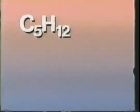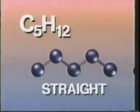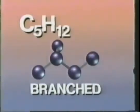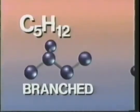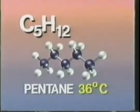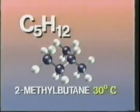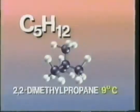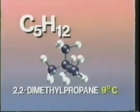A hydrocarbon with the formula C5H12 has three different structural isomers: a straight chain, a branched chain, and yet another different branched chain. The isomers are distinct compounds with different boiling points. Pentane boils at 36 degrees, 2-methylbutane at 30 degrees, and 2,2-dimethylpropane at 9 degrees.